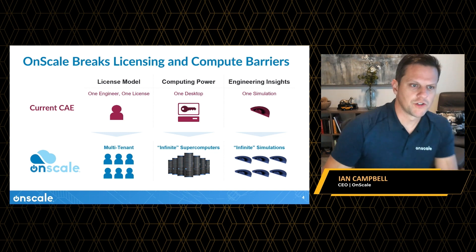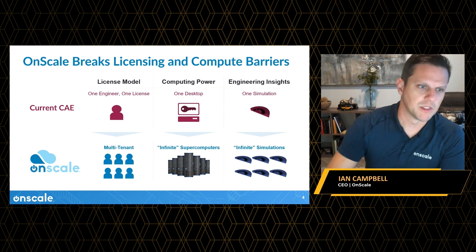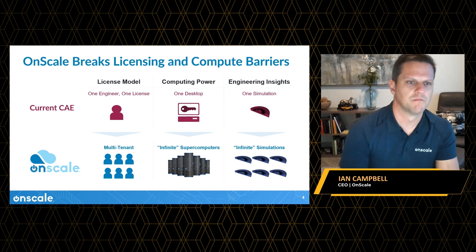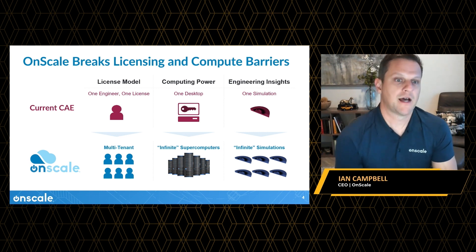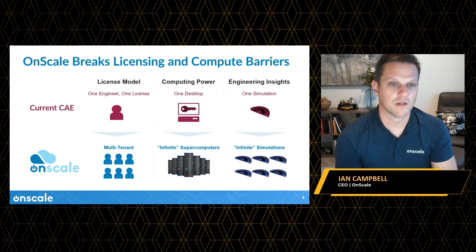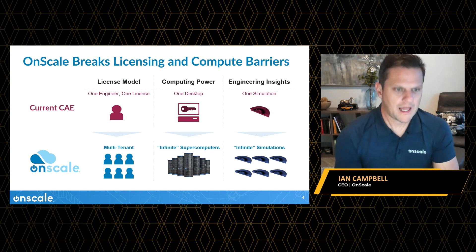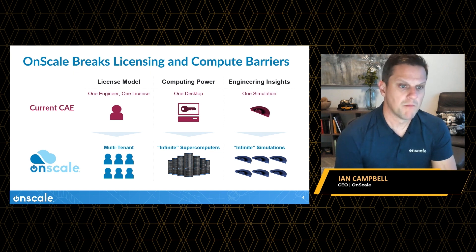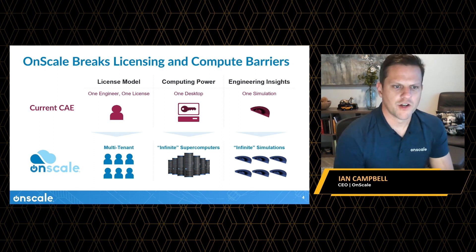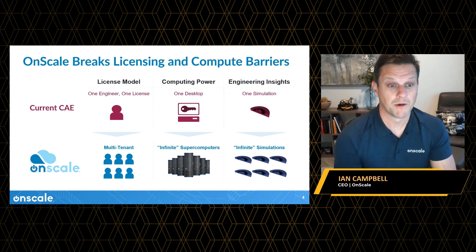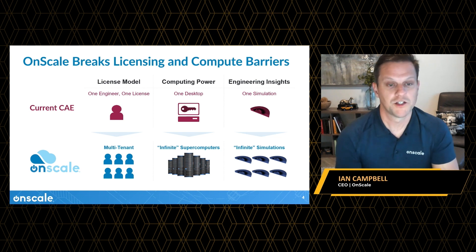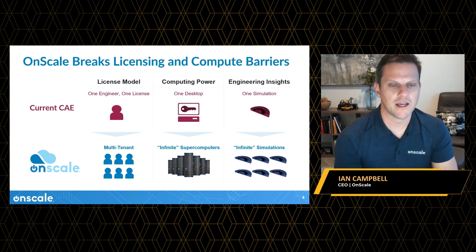Currently, most engineers buy a license of a desktop simulation tool — there's a one engineer, one license model — and they're limited to the compute power on that one desktop. For that reason, they're only able to run one simulation at a time in a very serial process. With OnScale and cloud simulation, we go to a multi-tenant model with no concept of licenses. We provide engineers access to practically limitless compute power on the cloud, enabling them to run practically limitless numbers of simulations, or very large simulations, and get engineering insights faster.